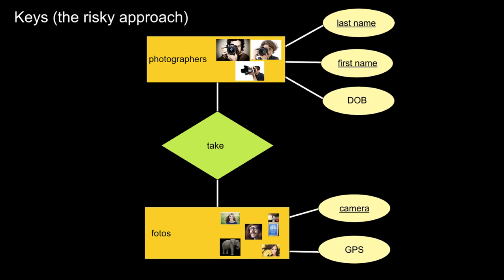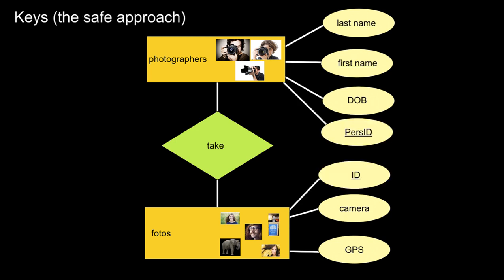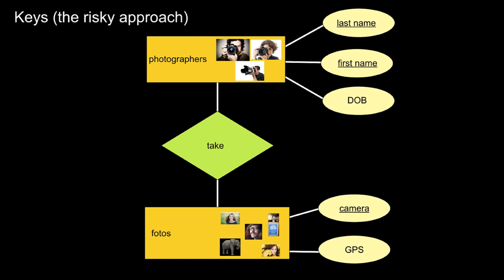Typically, how we fix that is by using an artificial key — depicted here as some sort of ID, an artificial integer key. Most database schemas in the world use integer keys. So I say there's a personal ID, and each photographer in that entity set has a unique personal ID — that is my key, not the combination of last name and first name. I do the same for photos: each photo has a unique ID. That concept makes a lot of sense and is not error-prone like the previous approach.